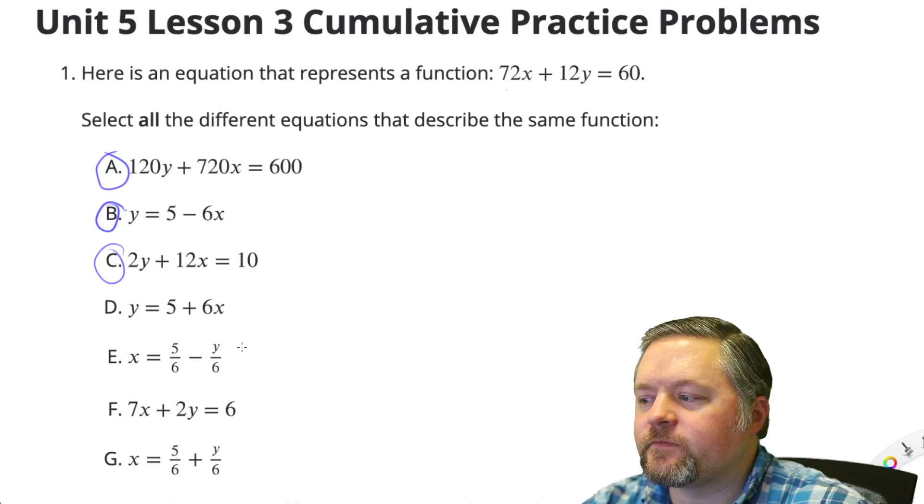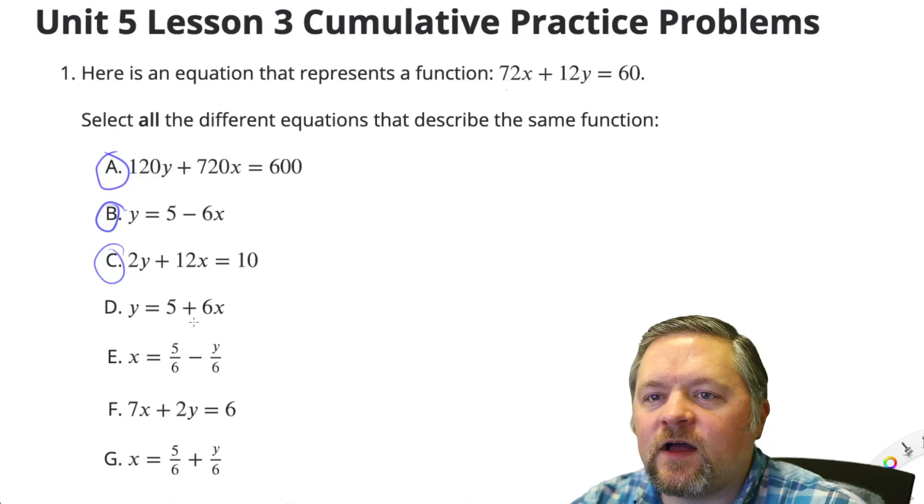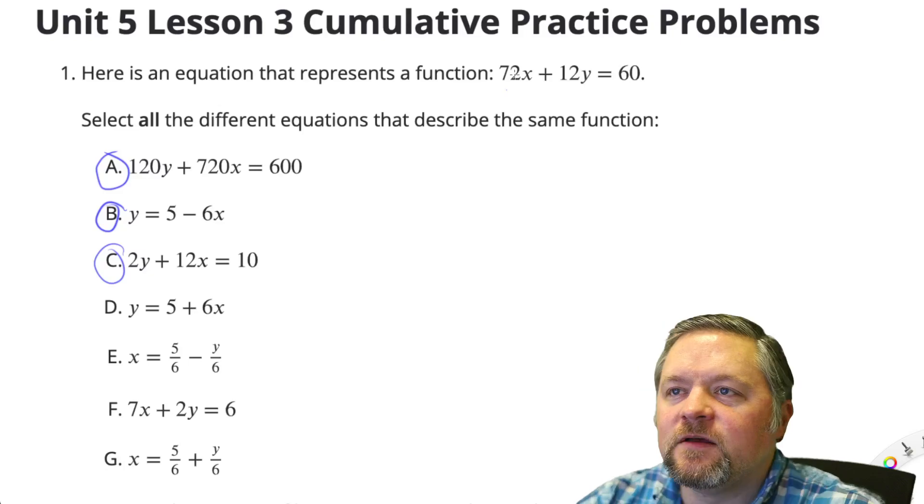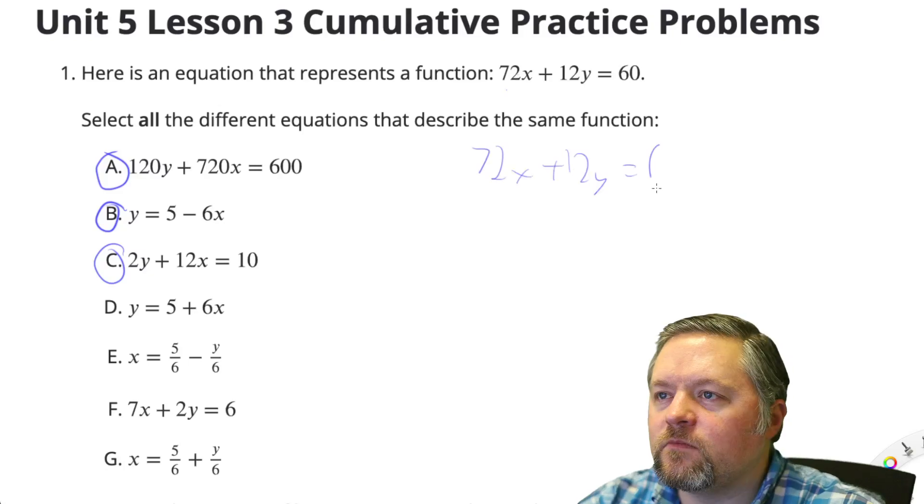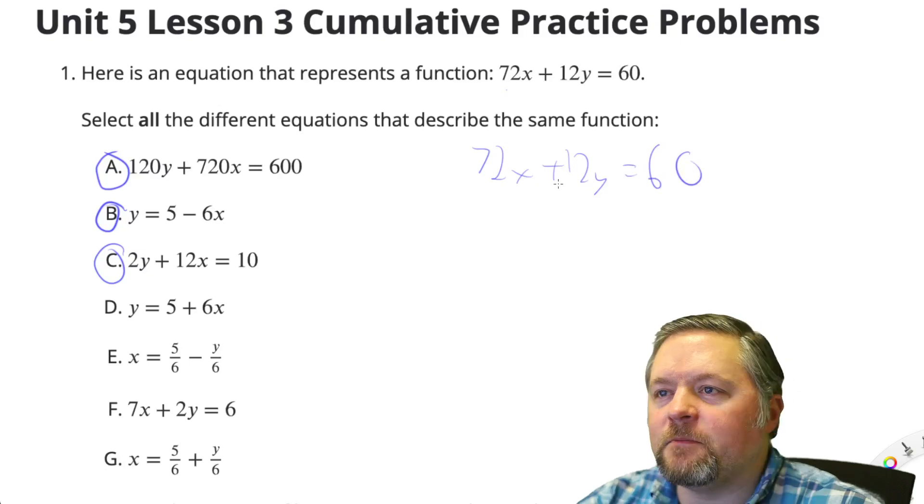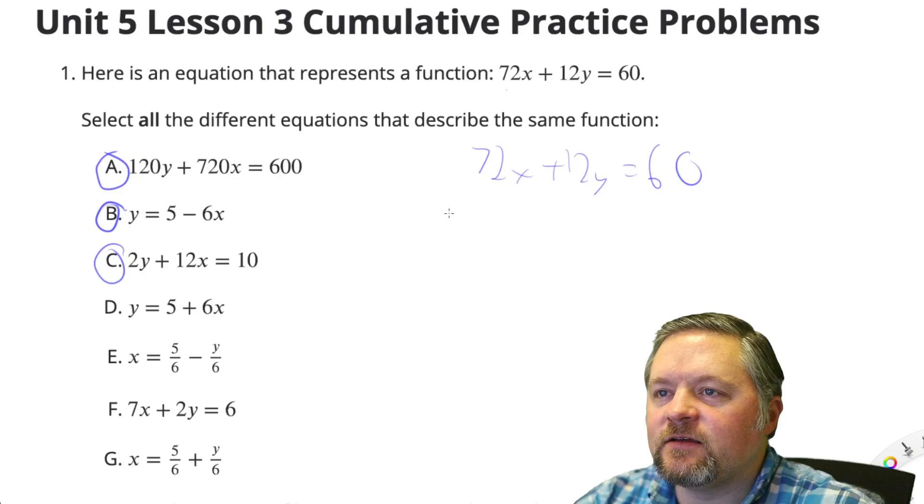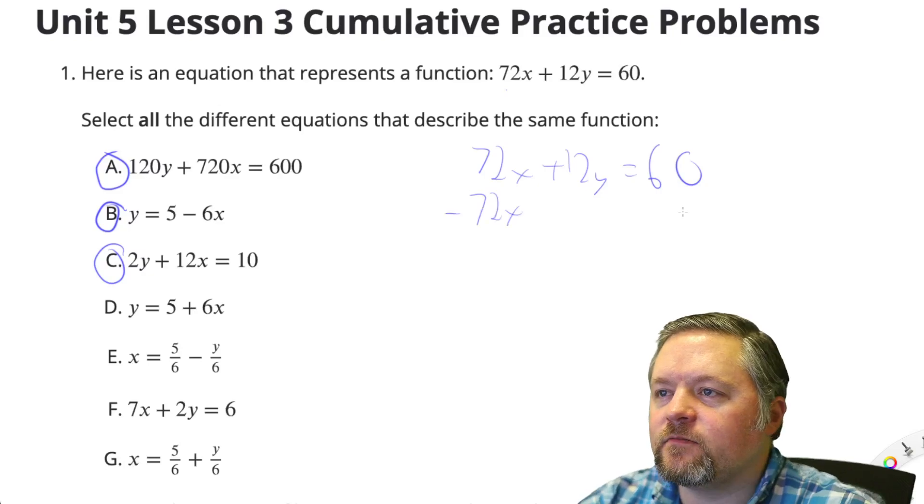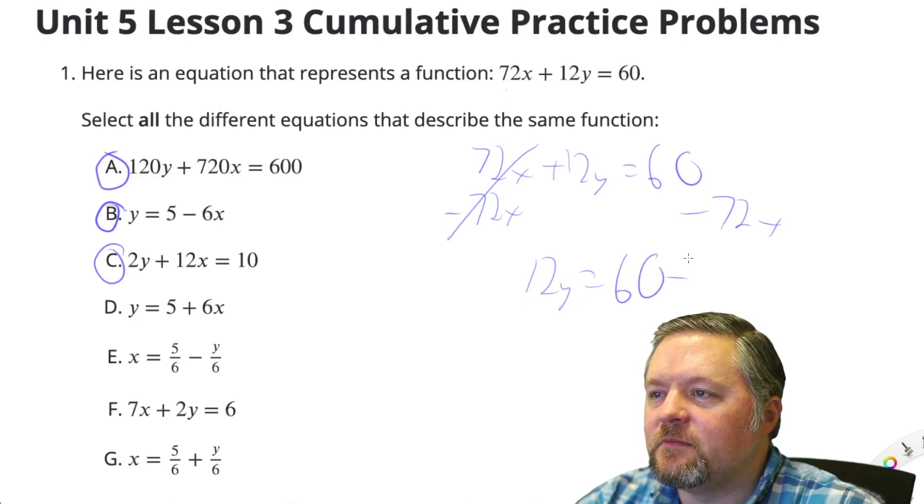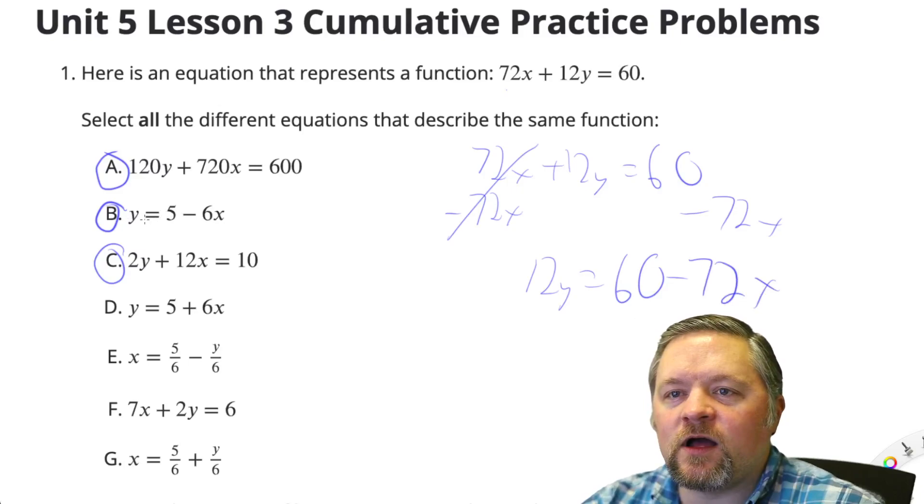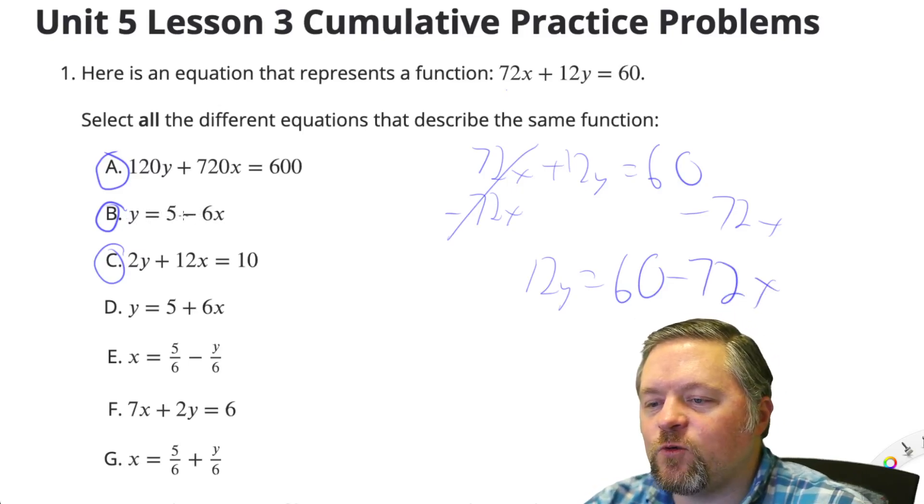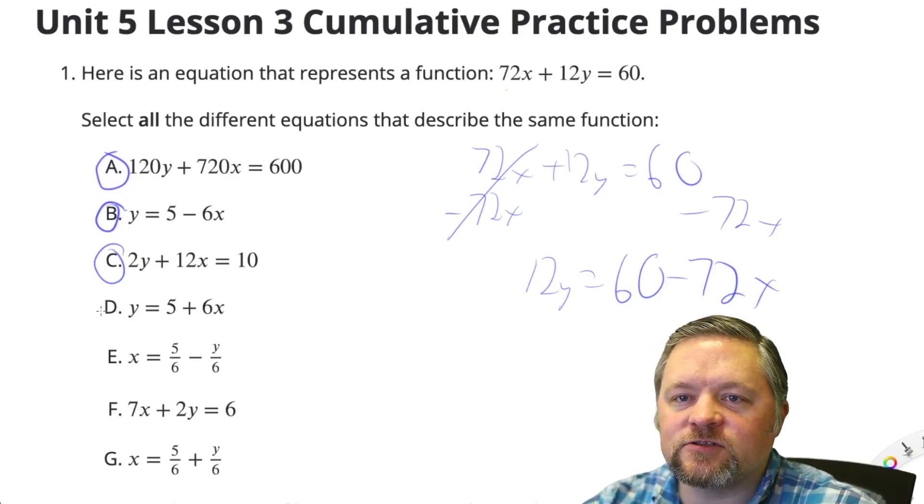Now, what's next? Y equals 5 plus 6x. Well, we have y equals 5 minus 6x. But if we took this equation, just to kind of show how we got B, if I wanted y equals, I need this x value off the left side. So I would subtract it. Do it to one side, you've got to do it to the other. Those cancel. 12y equals 60 minus 72x, which is y for B. When we divided everything by 12, we get a negative 6 here. But here, if we're adding 6, we're actually subtracting the x value here. So D does not work.